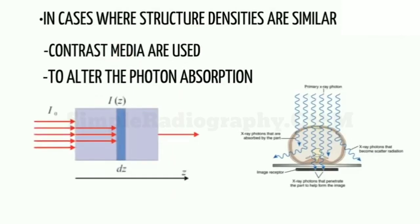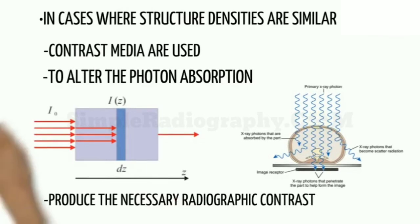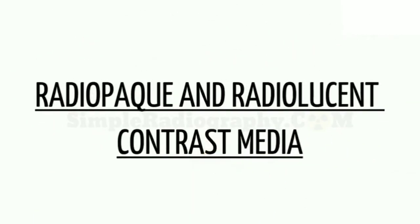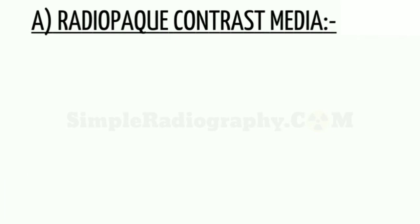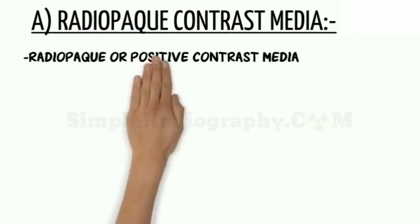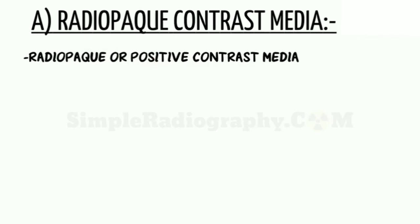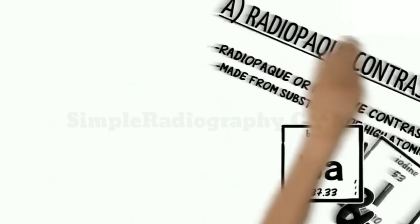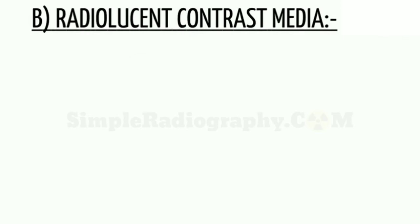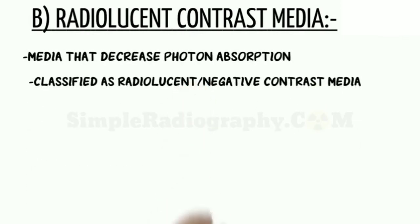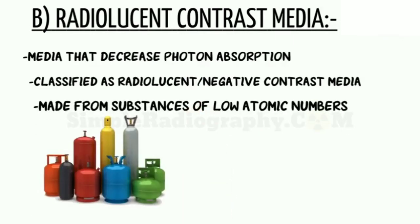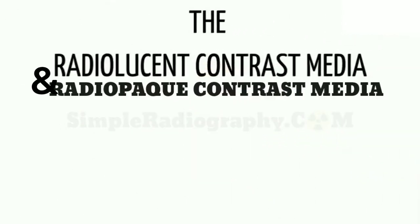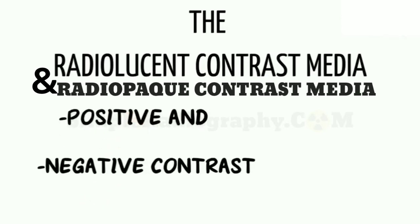In cases where structure densities are similar, contrast media are used to alter photon absorption and therefore produce the necessary contrast. Radiopaque contrast media — those that increase photon absorption — are termed radiopaque or positive contrast media, and are made from substances of high atomic numbers such as iodine and barium. Radiolucent contrast media — those that decrease photon absorption — are classified as radiolucent or negative contrast media, and are substances with low atomic numbers like gases. These media are sometimes referred to as positive and negative contrast media.